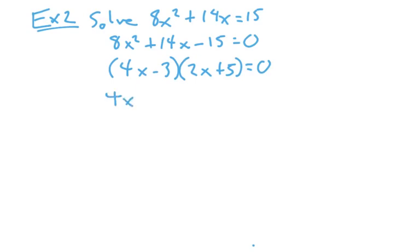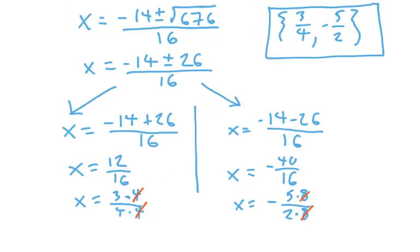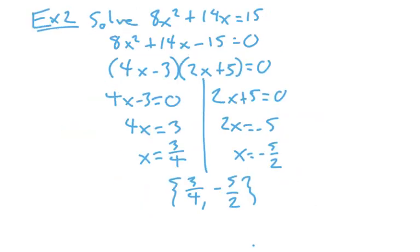This one would give you 4x is equal to 3, or x is equal to 3 fourths. This would give you 2x is equal to negative 5, or x is equal to negative 5 halves. The solution set is 3 fourths and negative 5 halves. And if you look back, yes, that's exactly what we got by the quadratic formula.